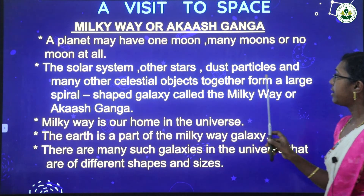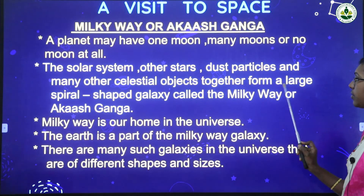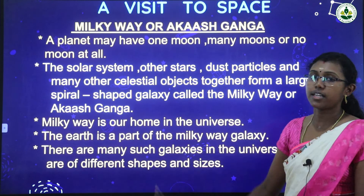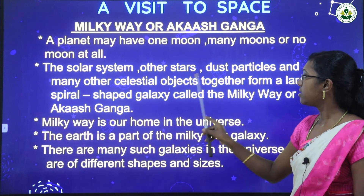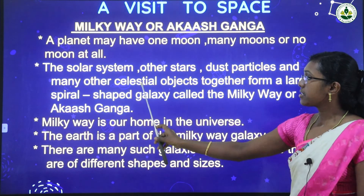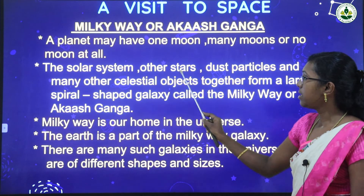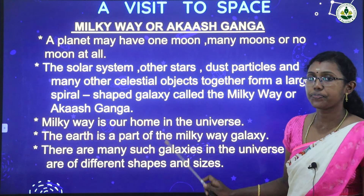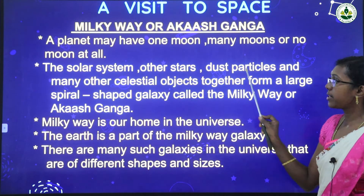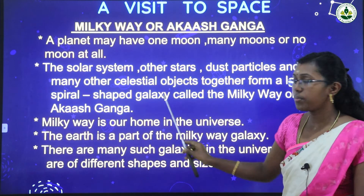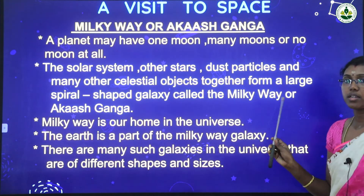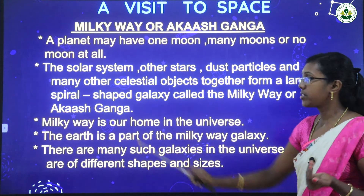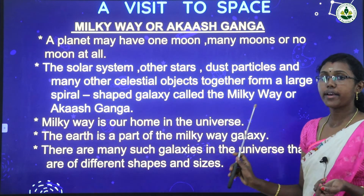The solar system, other stars, dust particles, and many other celestial objects together form a large spiral-shaped galaxy called the Milky Way or Akash Ganga. Remember the four key things: solar system, stars, dust particles, and other celestial objects — these together form a spiral-shaped galaxy known as Akash Ganga or Milky Way. Learn this spelling too.